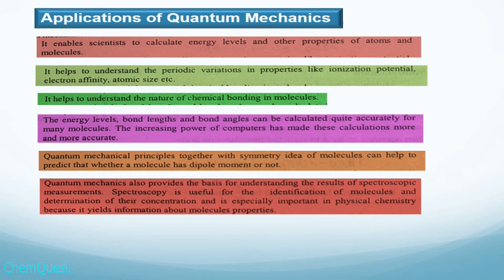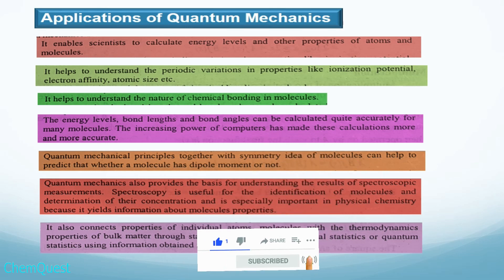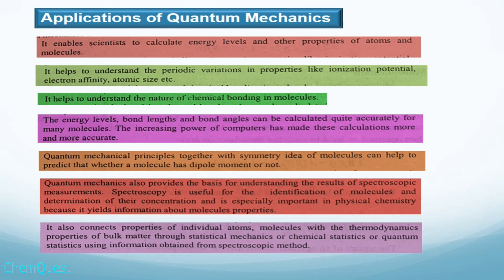Quantum mechanics also provides the basis for understanding the results of spectroscopic measurements. Spectroscopy is useful for the identification of molecules and determination of their concentration, and is especially important in physical chemistry because it yields information about molecular properties. Quantum mechanics also connects properties of individual atoms and molecules with the thermodynamic properties of bulk matter through statistical mechanics, chemical statistics, or quantum statistics, using information obtained from spectroscopic methods.